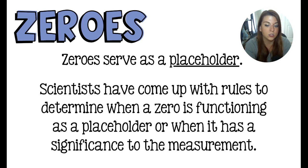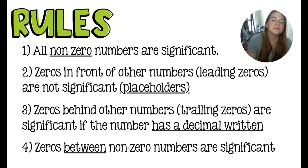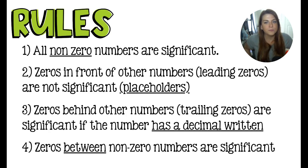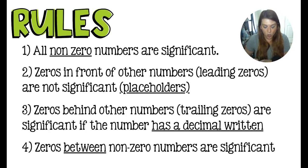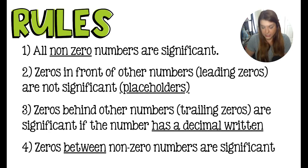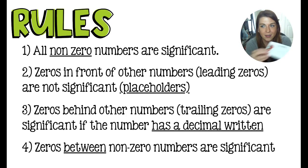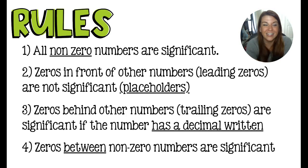There are rules for how this is done, but I'm going to teach you a trick that I think is way better. First rule: all non-zero numbers are significant — they have real value. Of course 1 means 1, 2 means 2. That one's straightforward. Second rule: numbers in front of other numbers are called leading zeros, and leading zeros have no value — they are just placeholders. Those zeros are just pushing the digit into place, so they have no value, and they are not significant.